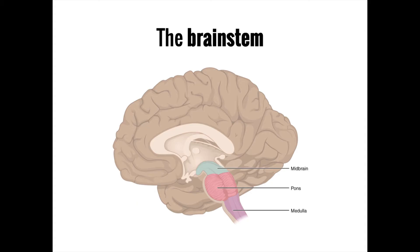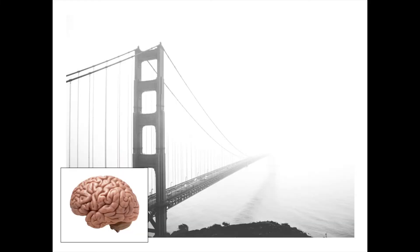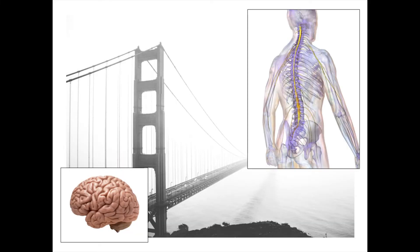Welcome back to Memorable Neurology. Today we're going over the anatomy of the brainstem. The brainstem acts as a bridge connecting the brain to the spinal cord and the rest of the body. However, the brainstem is much more than just a bridge, as it has a wide range of functions all its own, many of which we will cover in this video.